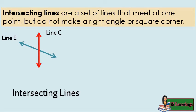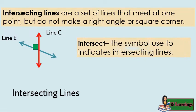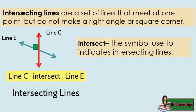Line C and line E are intersecting lines that meet at one point but do not make a right angle or square corner. This is the symbol used to indicate intersecting lines. So we can say Line C intersects line E.